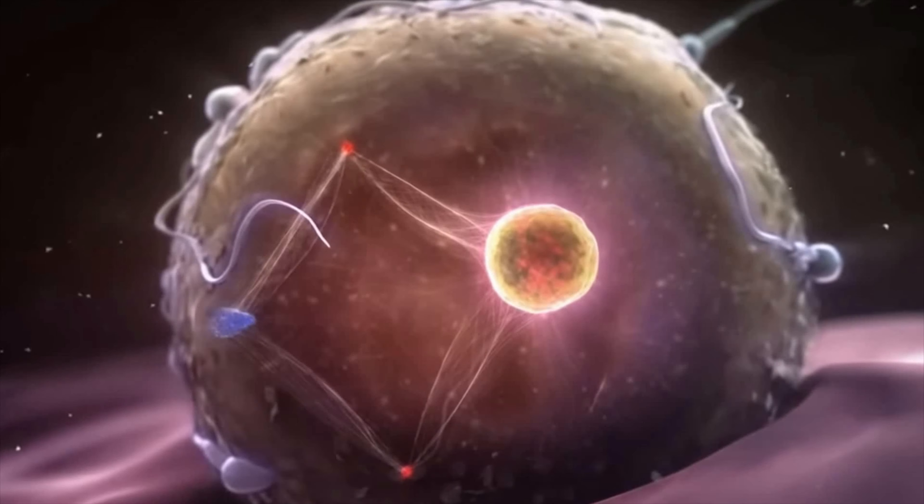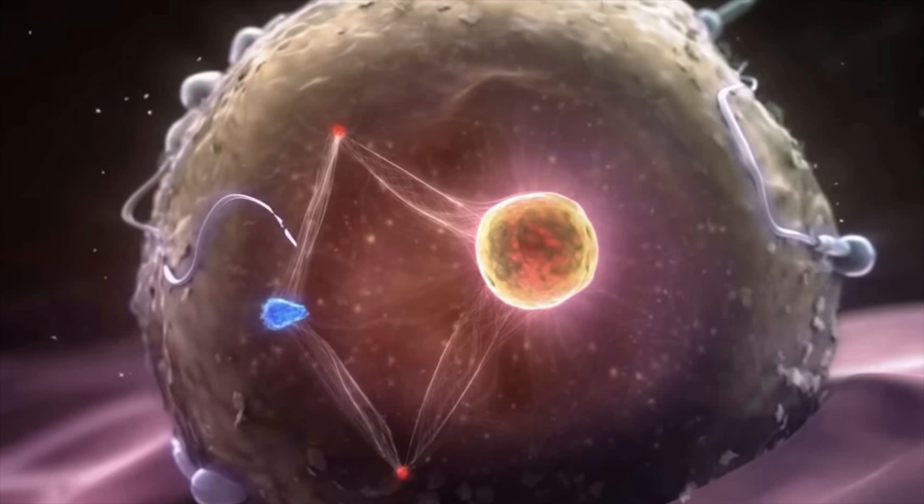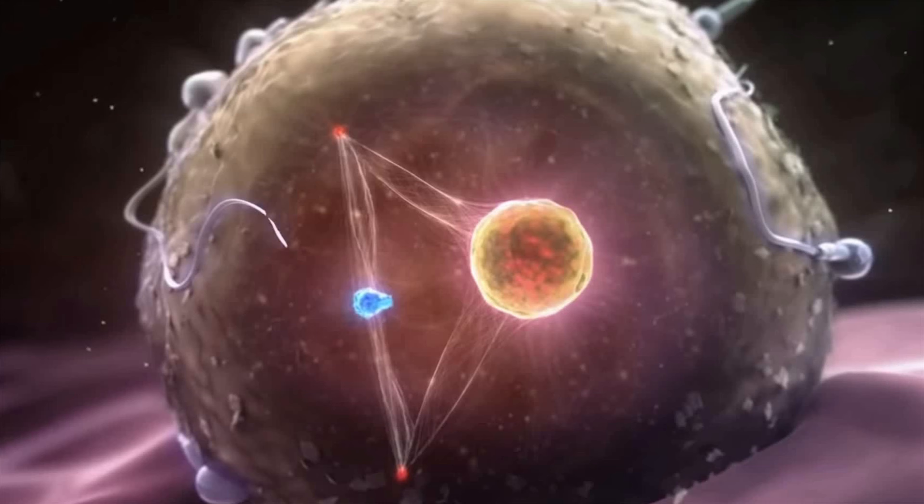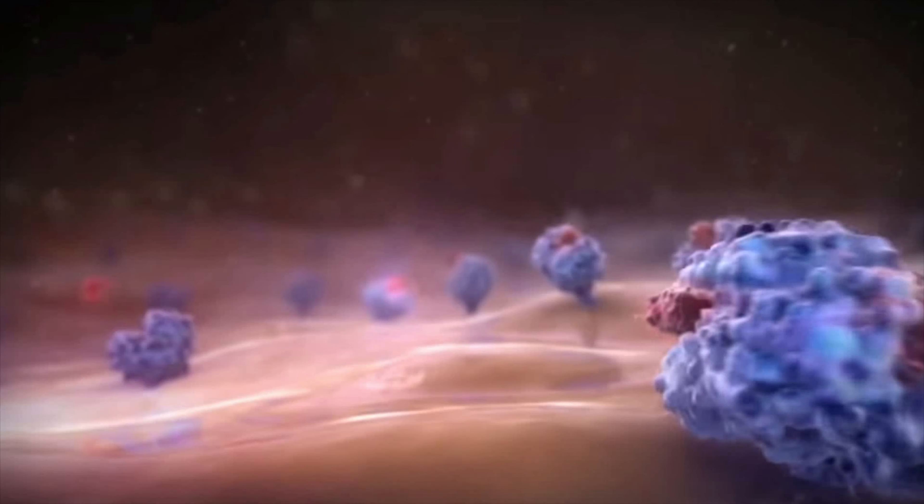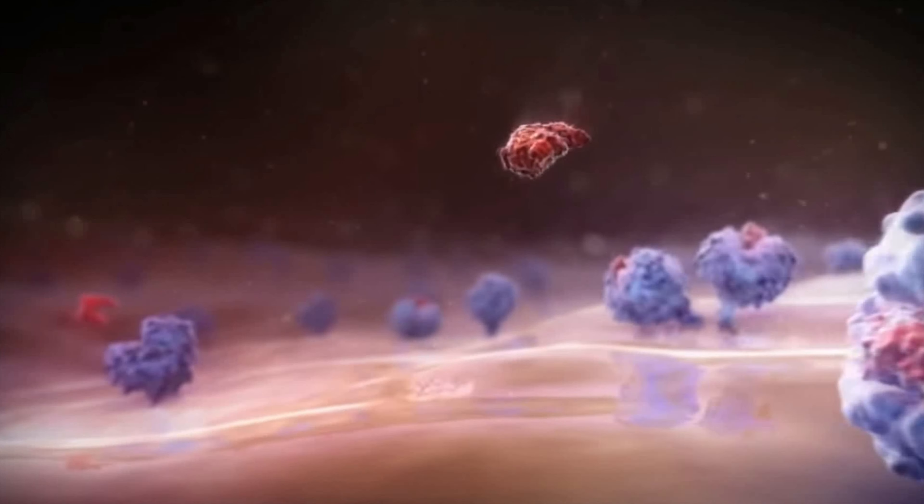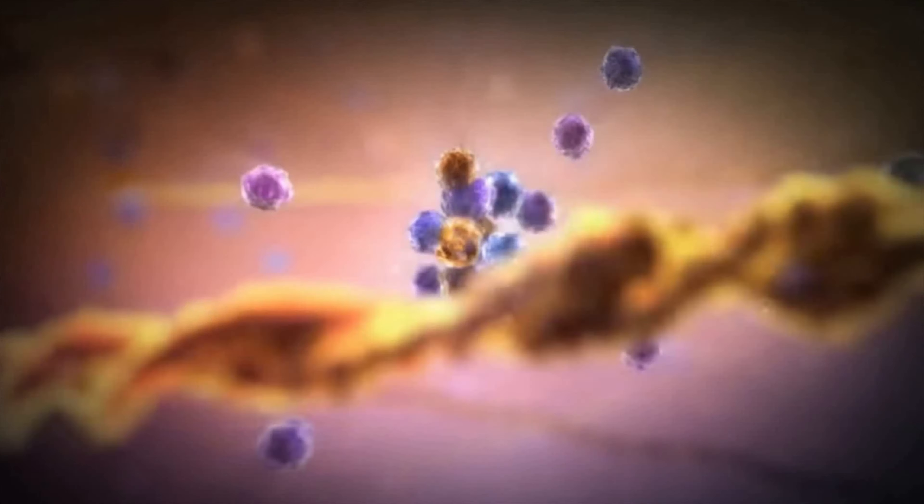Neurons are the primary components of the nervous system, along with the glial cells that give them structural and metabolic support. The nervous system is made up of the central nervous system, which includes the brain and spinal cord, and the peripheral nervous system.